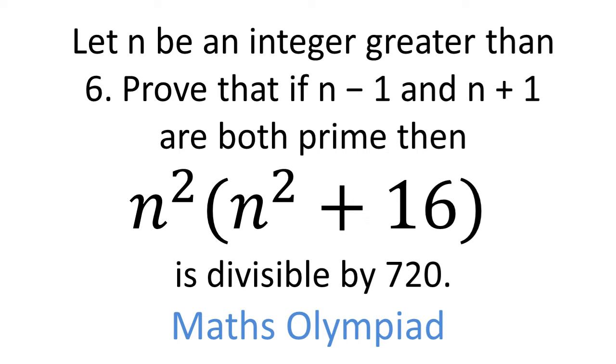In this video we're going to solve the following Maths Olympiad problem. Let n be an integer greater than 6. Prove that if n minus 1 and n plus 1 are both prime, then n squared times n squared plus 16 is divisible by 720.